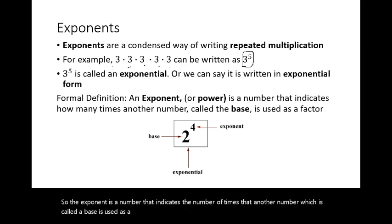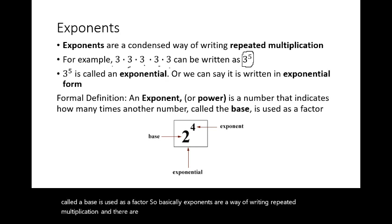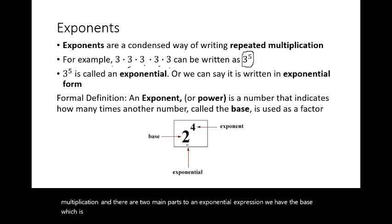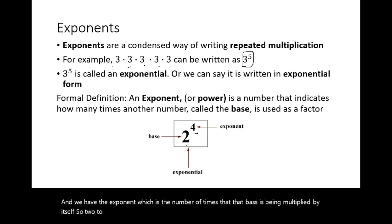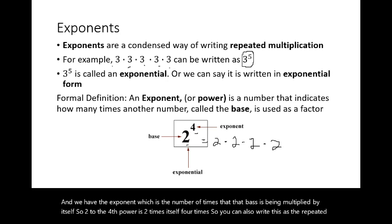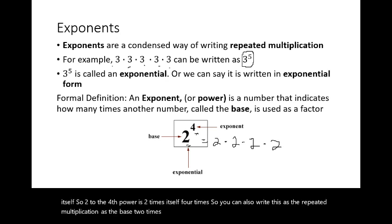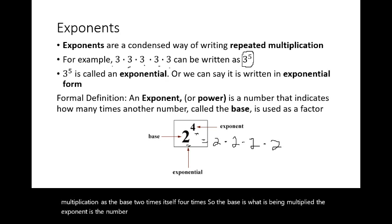The exponent is a number that indicates the number of times that another number — which is called a base — is used as a factor. Basically, exponents are a way of writing repeated multiplication, and there are two main parts to an exponential expression: the base, which is the number being multiplied by itself, and the exponent, which is the number of times that base is being multiplied by itself.